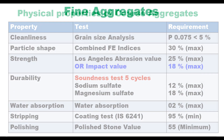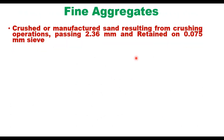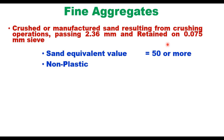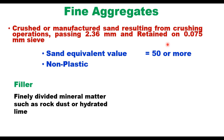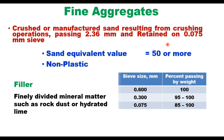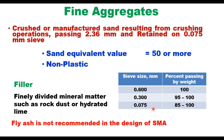Fine aggregate is crushed or manufactured sand resulting from crushing operations, passing 2.36 mm and retained on 0.075 mm sieve. This fine aggregate should have a sand equivalent value of 50 or more and should be completely non-plastic. The filler is finely divided mineral material such as rock dust or hydrated lime. Lime is generally preferred, and the grain size distribution of filler should satisfy the specified conditions. Fly ash is not recommended in the design of SMA.